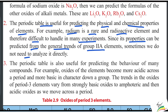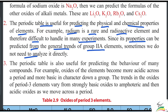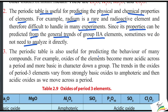Since radium's properties can be predicted from the general trends of group elements, sometimes you do not need to analyze it directly. If you have a group of elements, you can use the known properties of that group to predict the physical and chemical properties of radium.